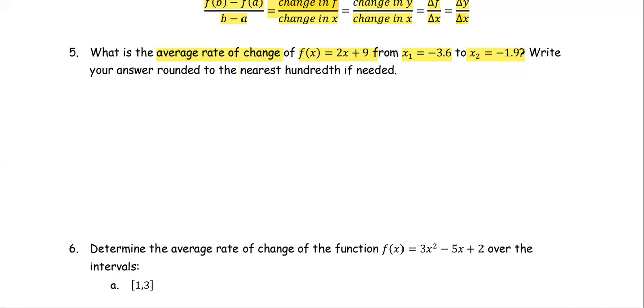Let's get started by writing out the formula for the average rate of change, which is the same as the slope formula, Y2 minus Y1 over X2 minus X1. In this case, Y2 is going to be the function at x2, and Y1 is the function at x1, all divided by x2 minus x1.